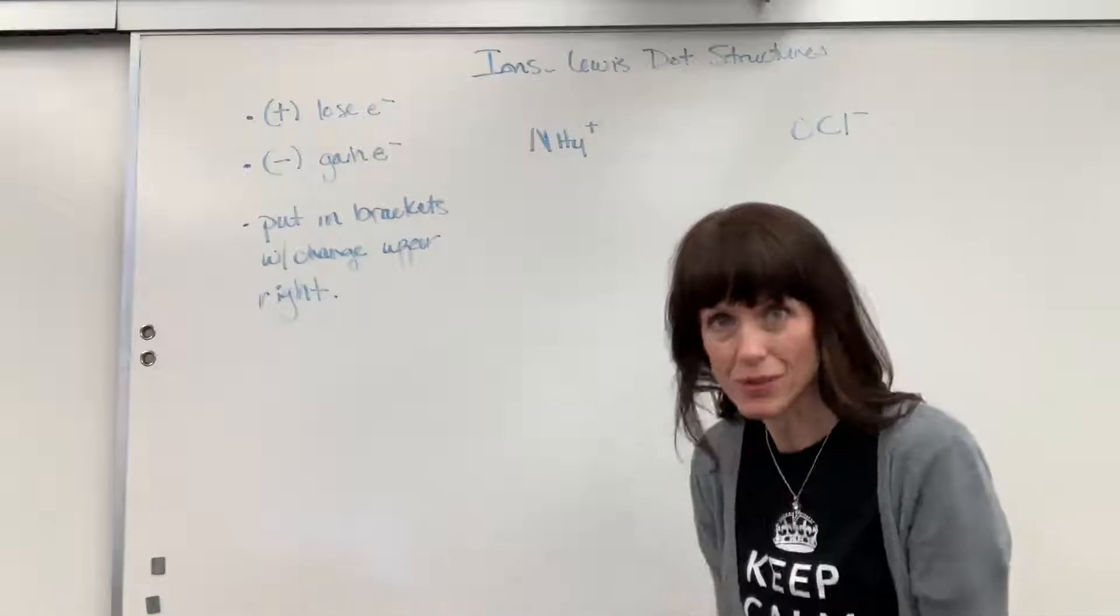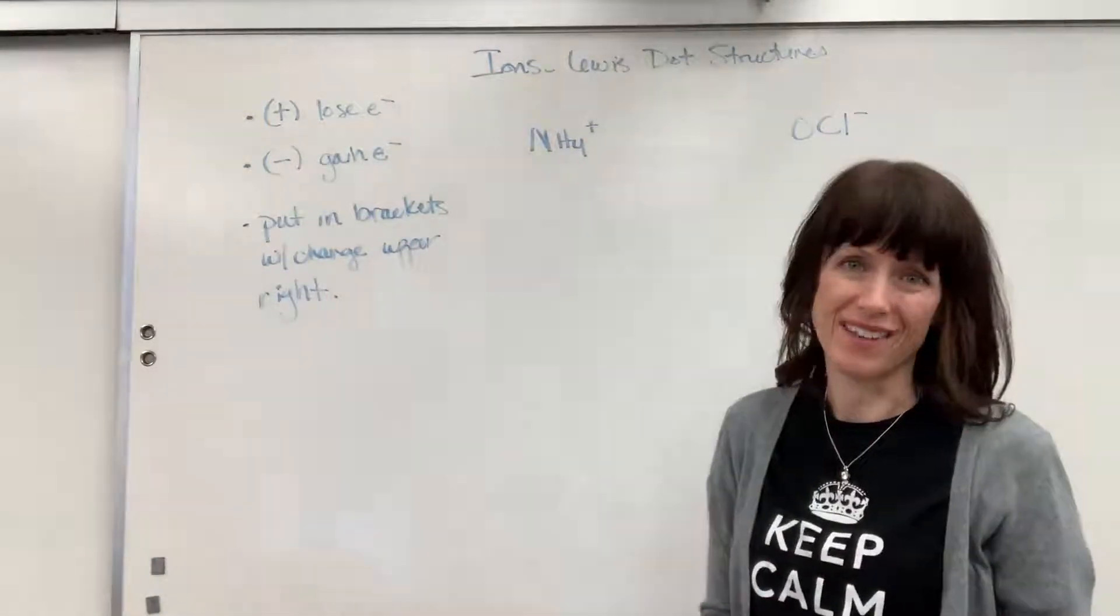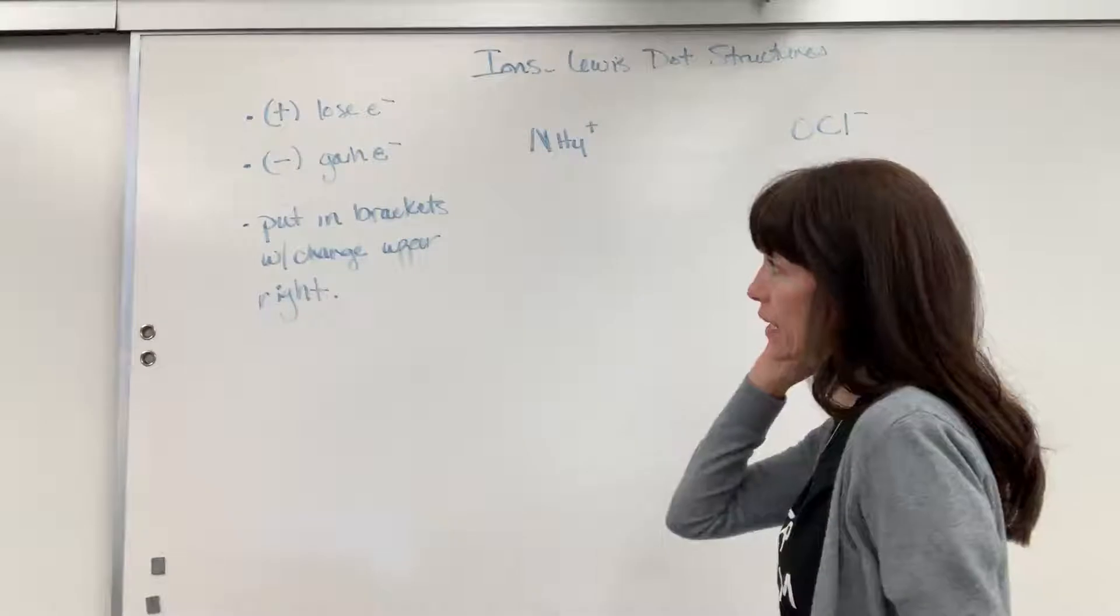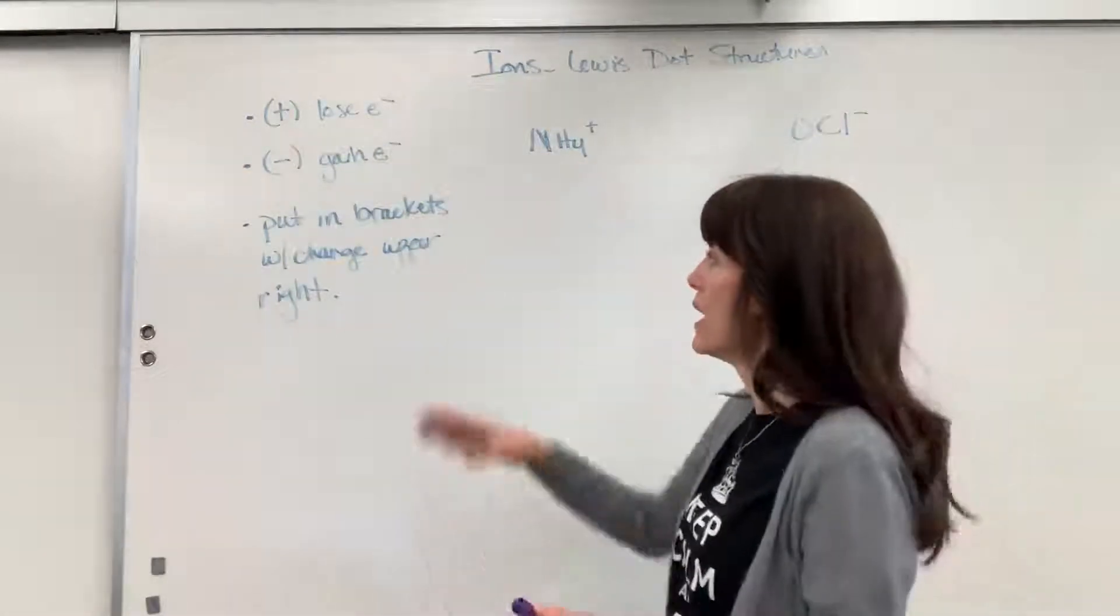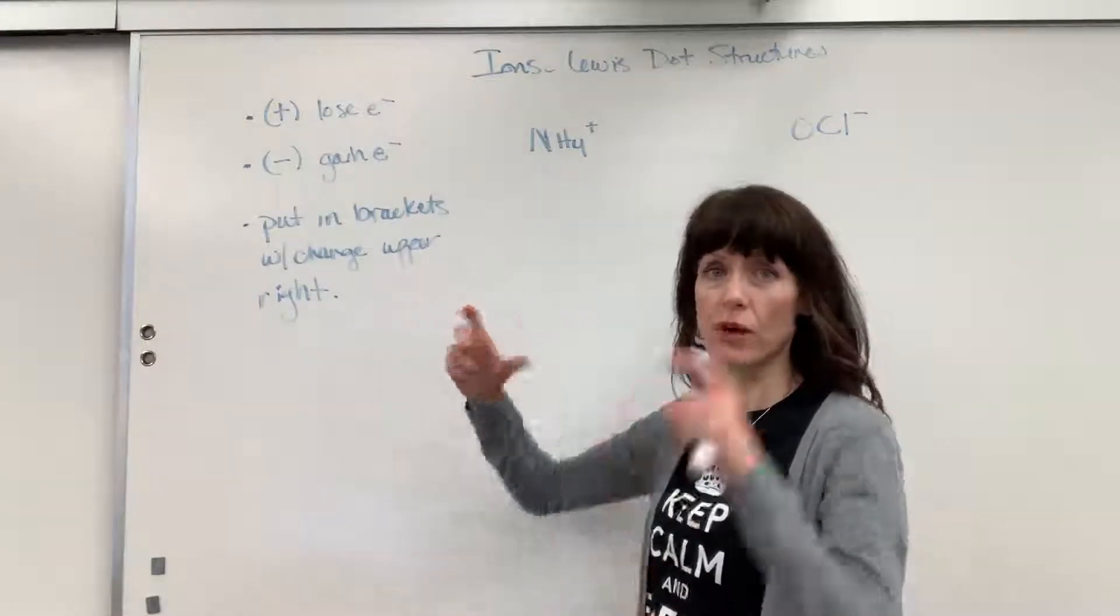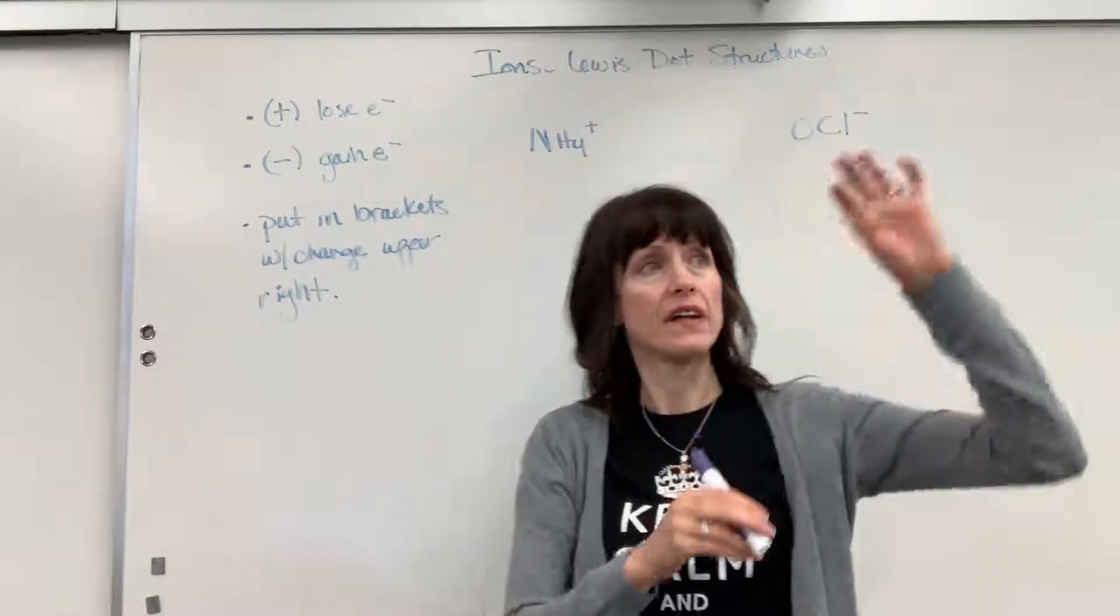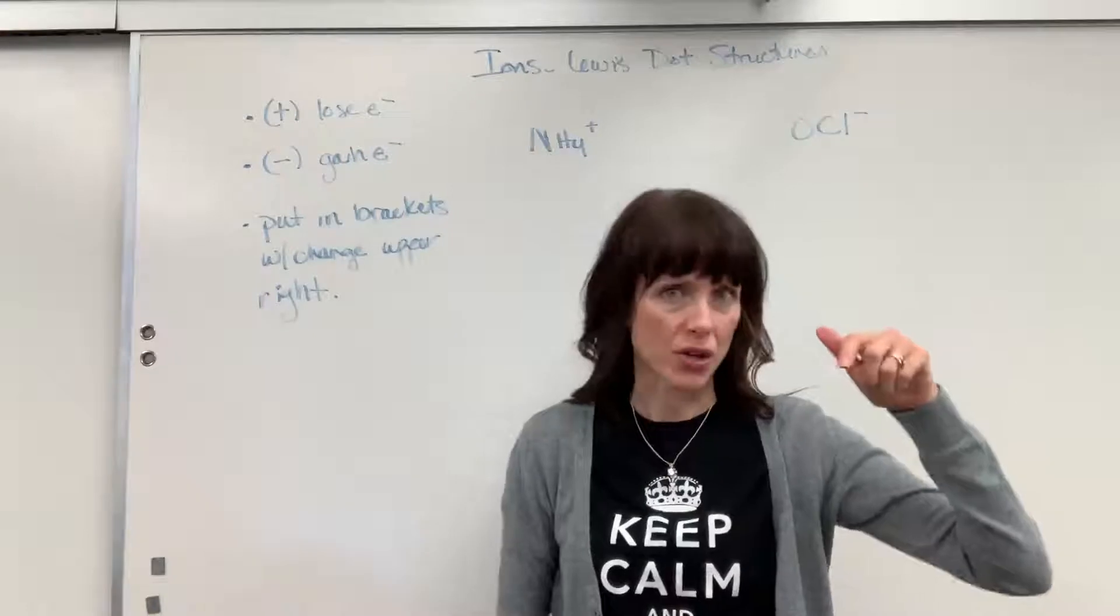For now, I'm going to show you the principle of how to write Lewis dot structures when you have the ion. Last thing, to show the reader that we have an ion, after we do the Lewis dot structure, we always put it in brackets. And then in that top right-hand corner, we write the charge.